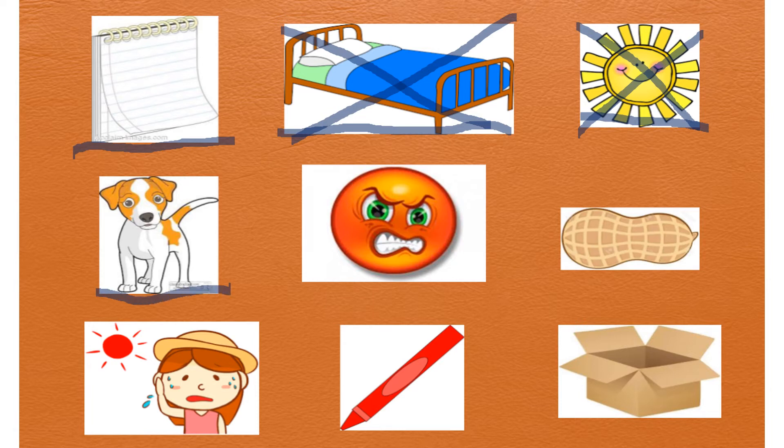Okay, now we get to go to the second row where I see a dog and somebody who's mad and a nut. So we have dog, mad, nut. All right, listen to my sounds, see if you can figure it out.